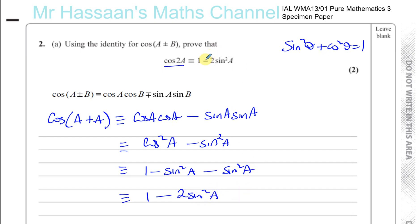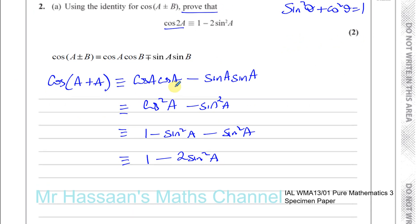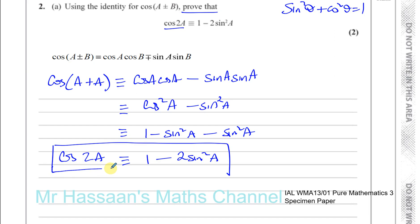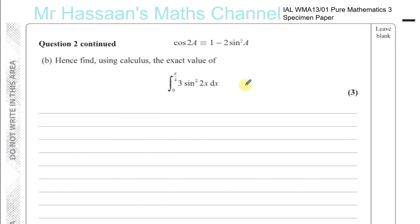Now this is a formula that people normally just quote because they've memorized it, but when a question says 'prove', you have to be very careful to show your steps very clearly — to show how you get from one step to the other. It's very important to do that. So cosine 2A is identical to 1 minus 2 sine squared A. Be very careful to show your steps clearly and don't skip anything out, especially when you're asked to show something equals something else — the steps must be shown. That's part A.